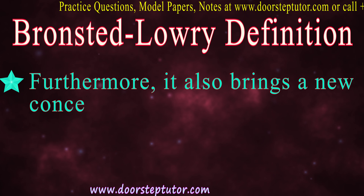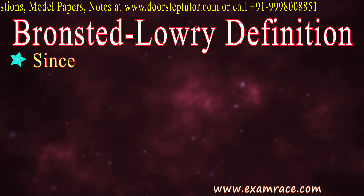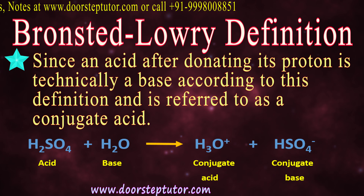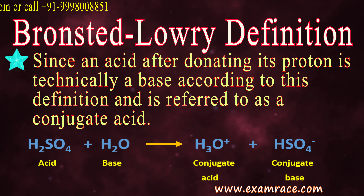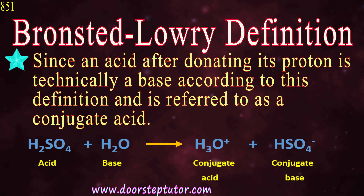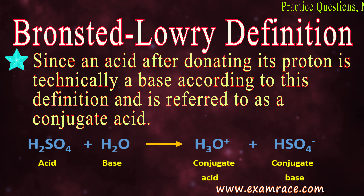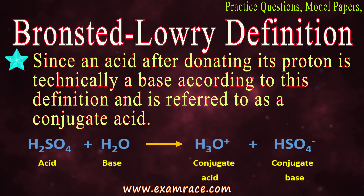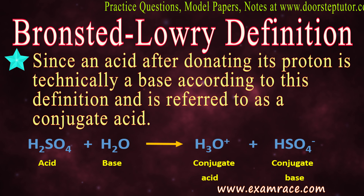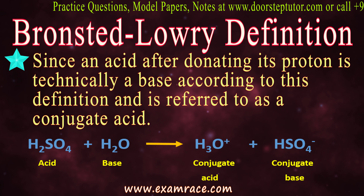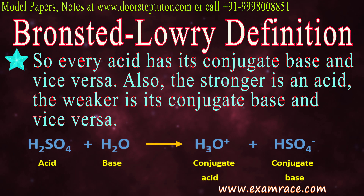Furthermore, the Bronsted-Lowry definition also introduces a new concept of conjugate acid and conjugate base. Since an acid, after donating its proton, is technically a base, it is referred to as a conjugate base. So conjugate acid and conjugate base are two new terms. When an acid gives its H+ ion to another compound, it becomes a base — referred to as a conjugate base — and every acid has its conjugate base, and vice versa.